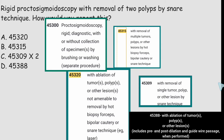The right code is 45315, option B. Code 45315 is for proctosigmoidoscopy rigid with removal of multiple tumors or polyps by hot biopsy forceps, bipolar cautery, or snare technique. In the scenario there is rigid proctosigmoidoscopy with removal of two polyps — that is multiple polyps — by snare technique, which matches 45315 exactly. So option B is the right answer.